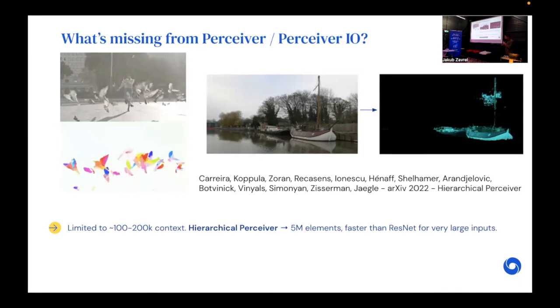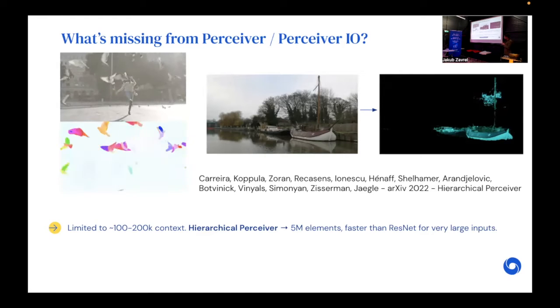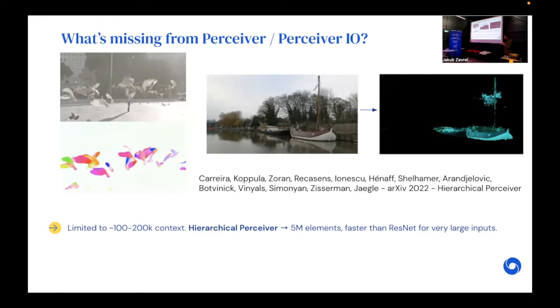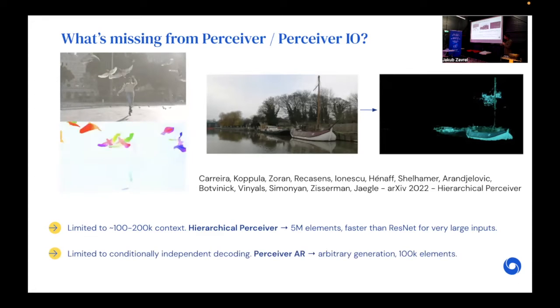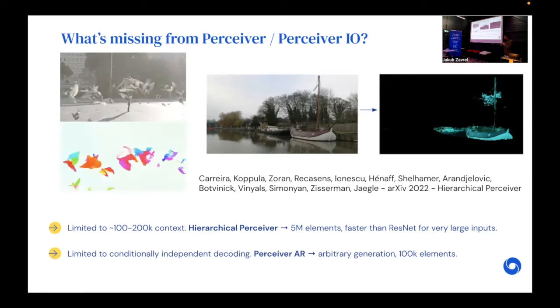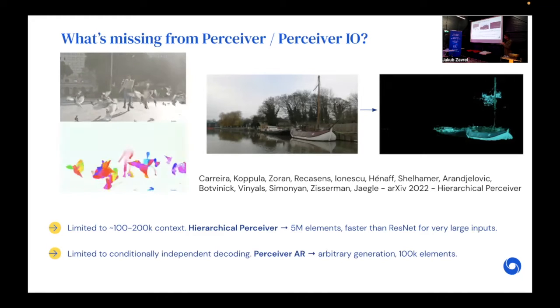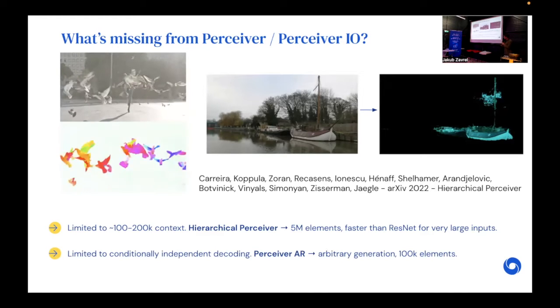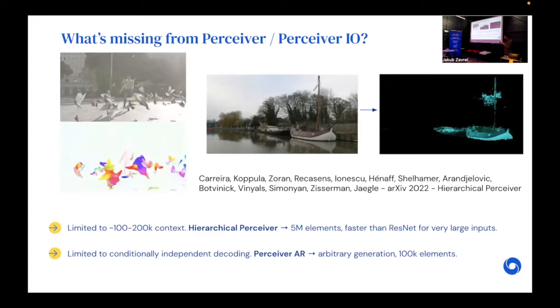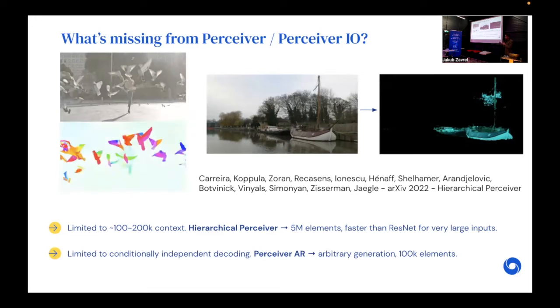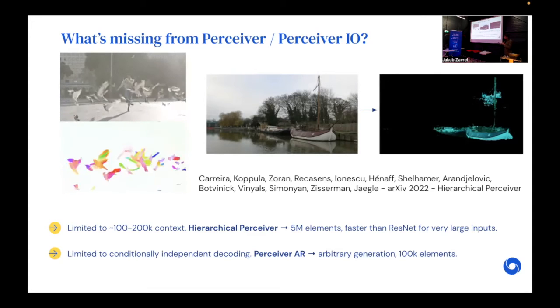But the problem that I think is more important that personally has bothered me more about these architectures is that they make a very restrictive assumption about how output points are decoded. In particular, Perceiver IO assumes that all of the output points are independently decoded. This restricts its ability to model very complex interdependent relationships. The work I'm going to be focusing on today, the Perceiver AR work, gets around this by incorporating autoregressive decoding while keeping all of the principles that make Perceivers work.